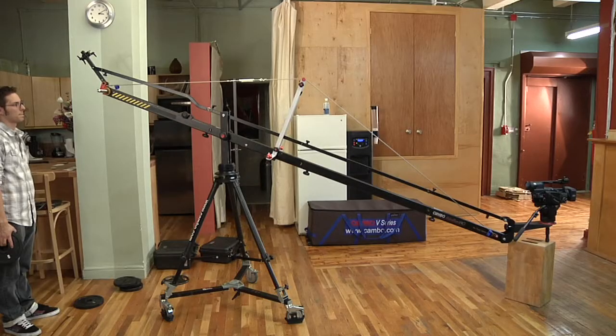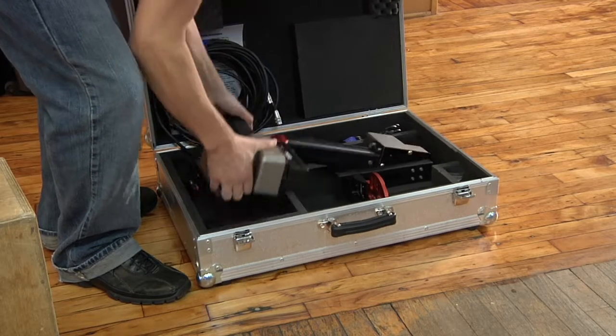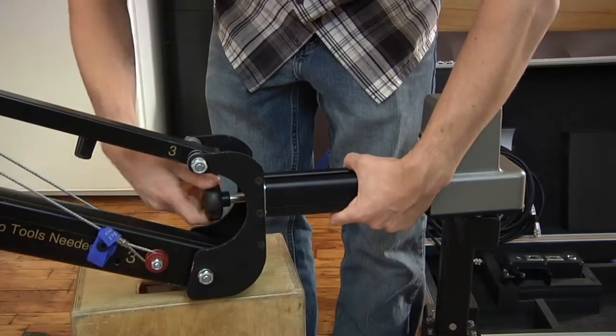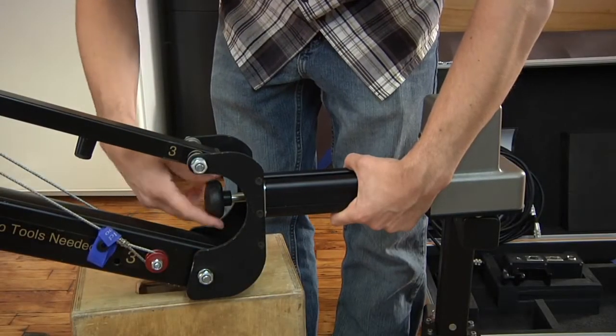First, start with the crane built up to the point of having added the top suspension cables. Instead of the bowl arm, we are going to attach the motorized head. It screws on in the same manner as the bowl arm.